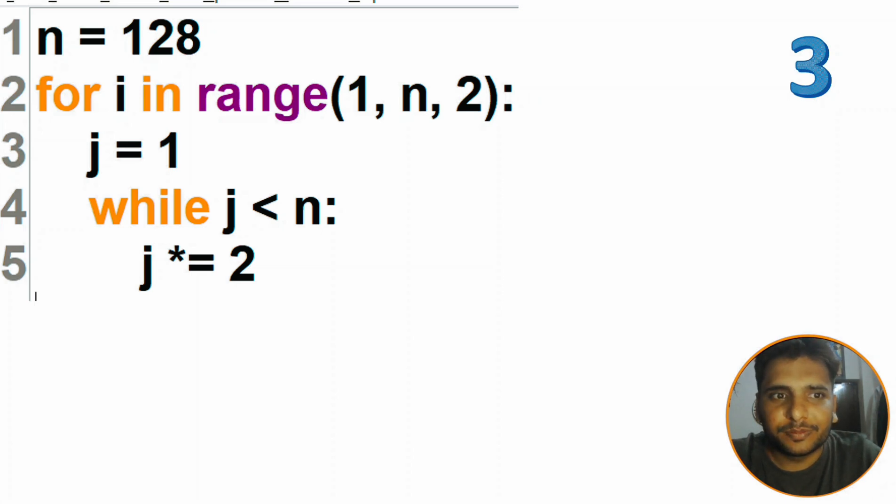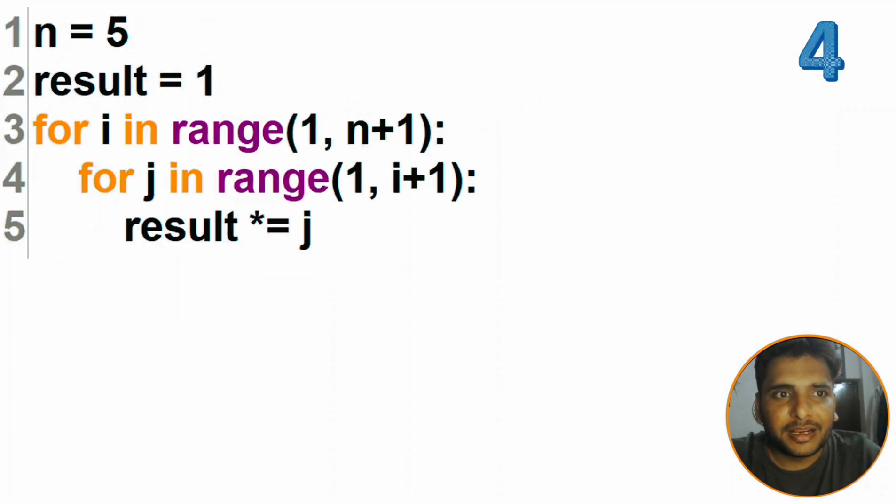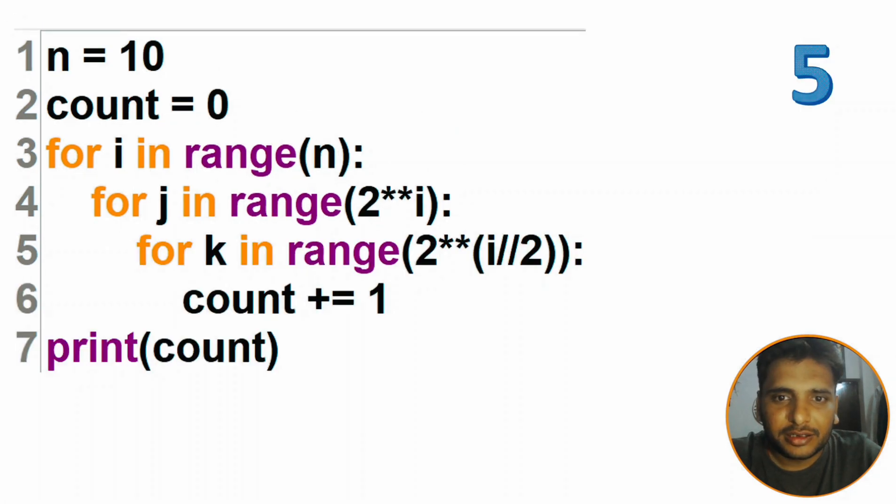Fourth one: both are for loops, nested loops. Go through this, pause the video, and try to solve it. Fifth one: in this we have a total of three nested loops, and you need to find what is the count and also time complexity.